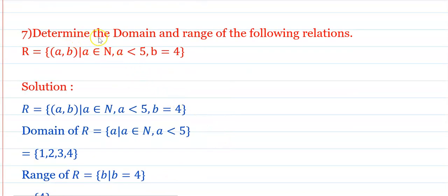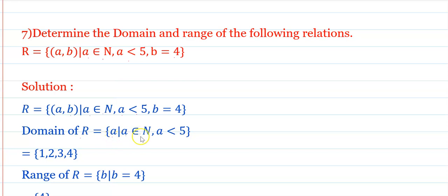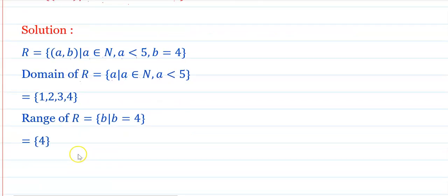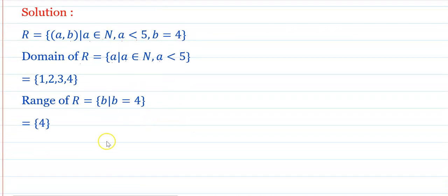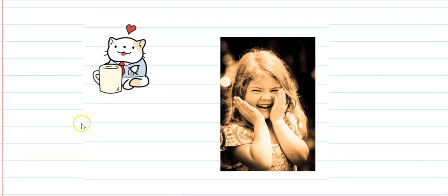Question 7: Determine the domain and range of the relation R = {(a,b) : a belongs to natural numbers, a < 5, and b = 4}. The domain of R is {a : a belongs to natural numbers, a < 5} = {1, 2, 3, 4}. The range of R is just the single element {4}. This completes Chapter 6 on Sets and Relations.